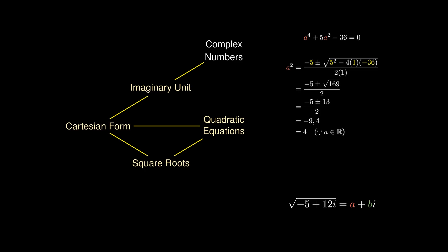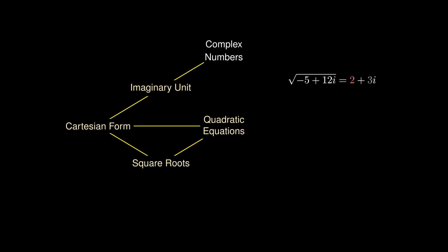We conclude that a = ±2, and substituting into b = 6/a gives b = ±3, so the square root of -5 + 12i is 2 + 3i. A quick calculation confirms that (2 + 3i)² = -5 + 12i, making 2 + 3i the square root of -5 + 12i.